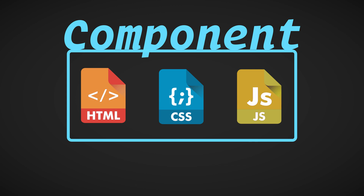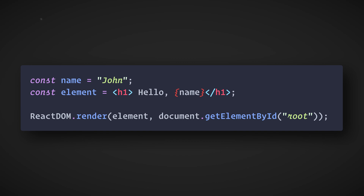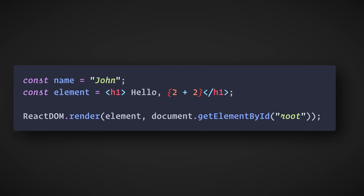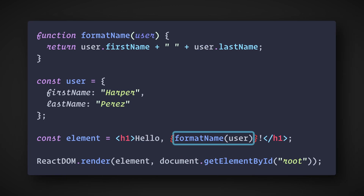Let's see what JSX can do. In this example, we have a variable called name, and then we use it in JSX by wrapping it with curly braces. You can actually wrap any valid JavaScript expression inside of curly braces in JSX. For example, we could replace name with 2 plus 2, and that would work just fine — the result would be hello 4. In this example, we call a function from inside the JSX expression.